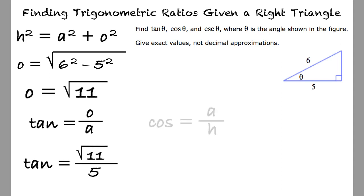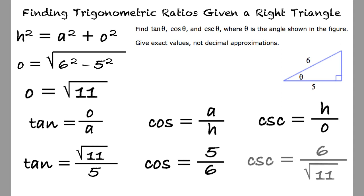Cosine is the adjacent over the hypotenuse, which equals 5 sixths. And cosecant is the hypotenuse over the opposite, which equals 6 over the square root of 11.